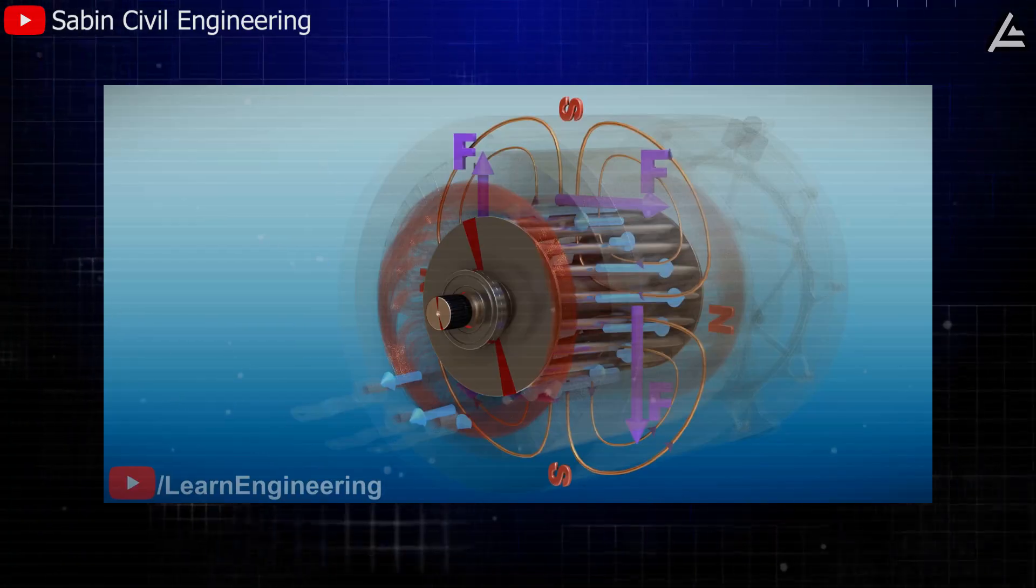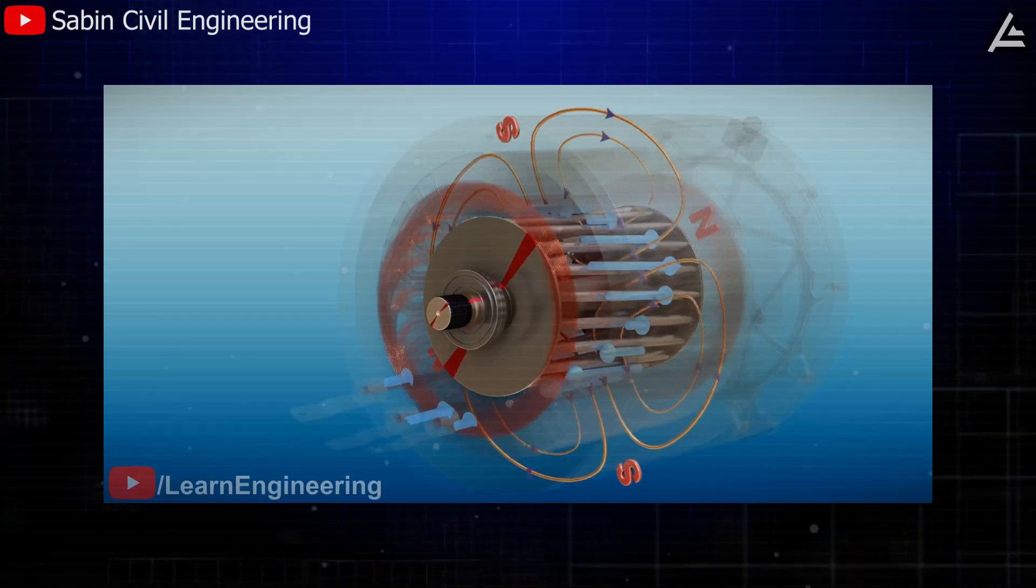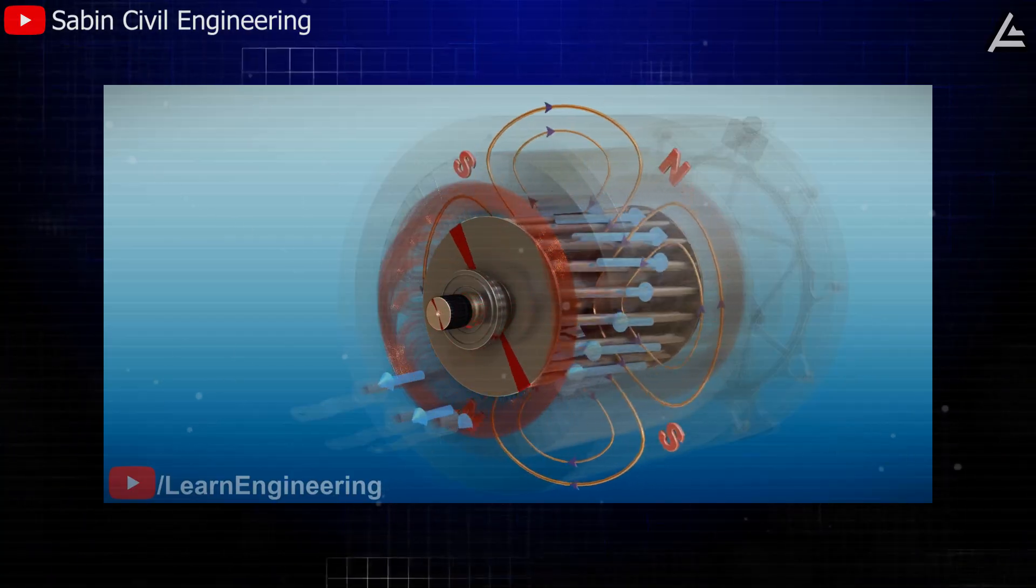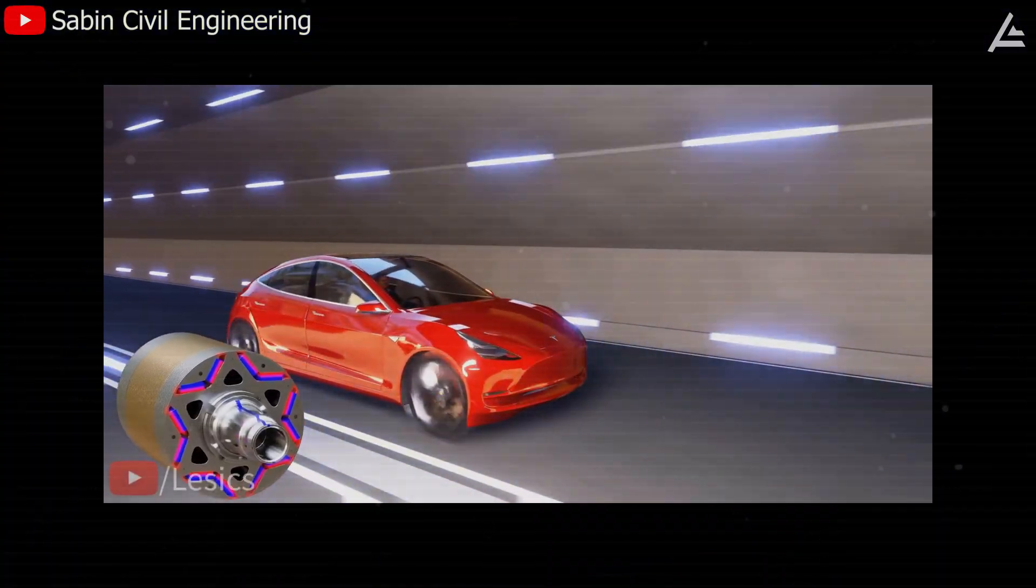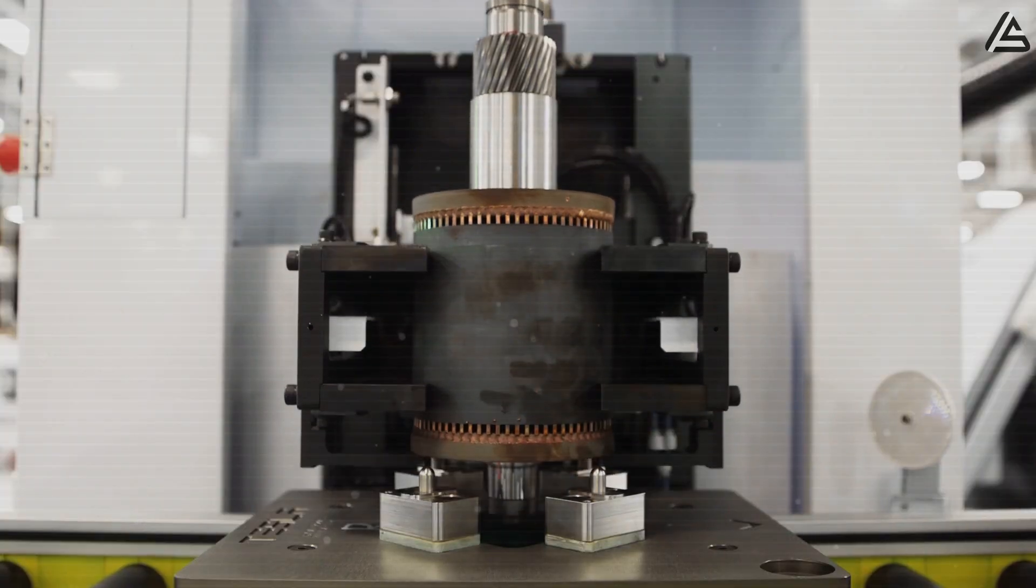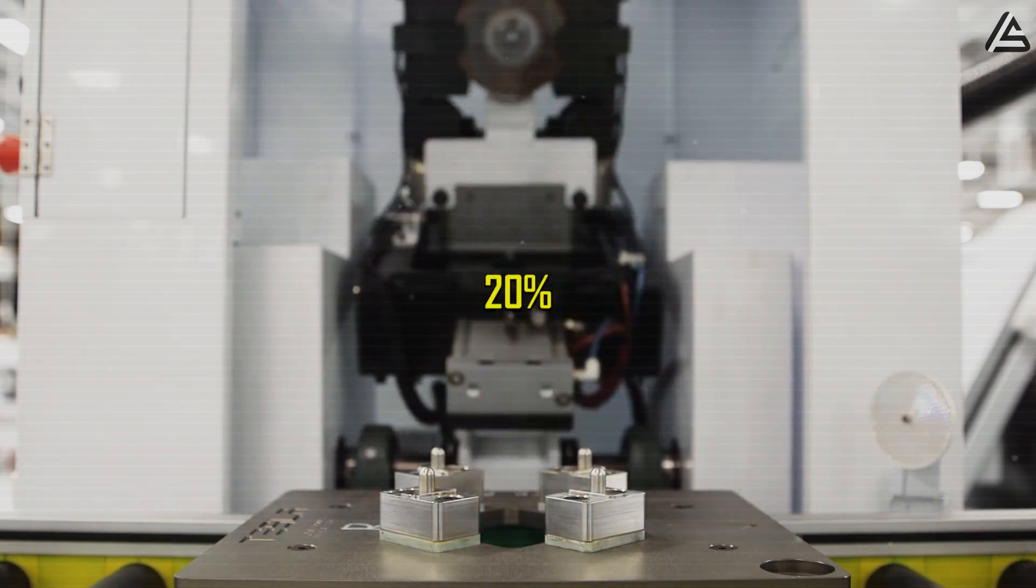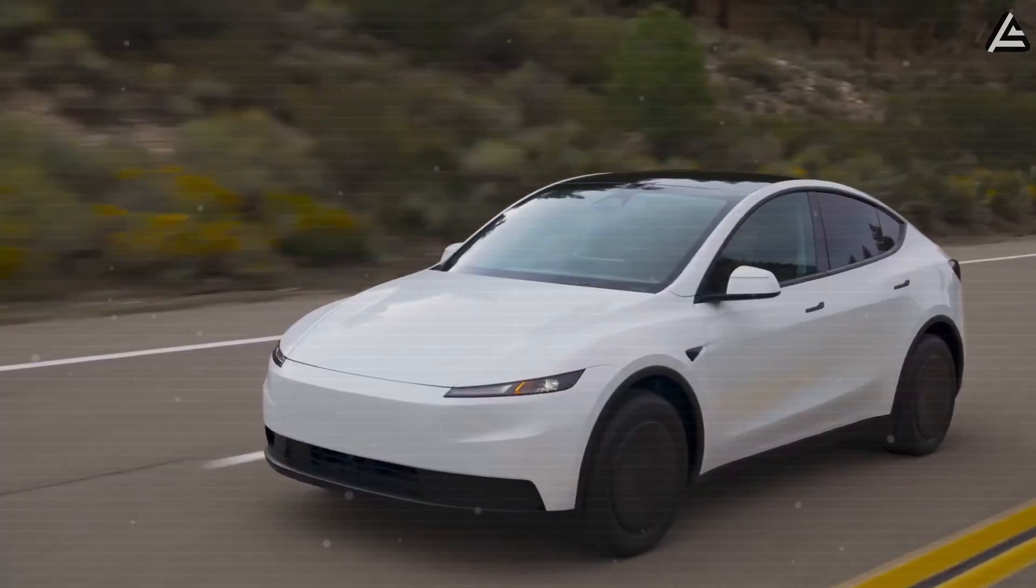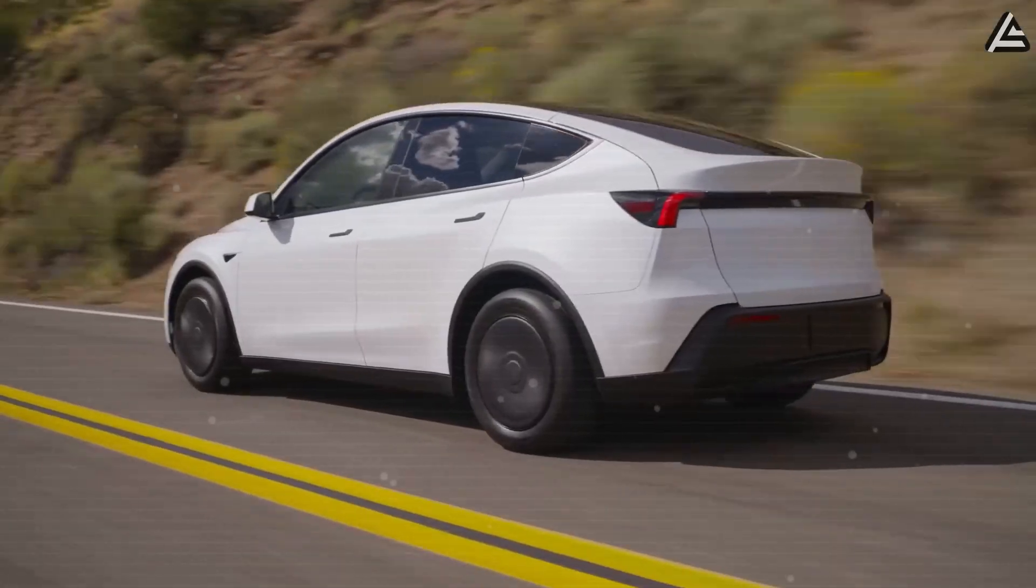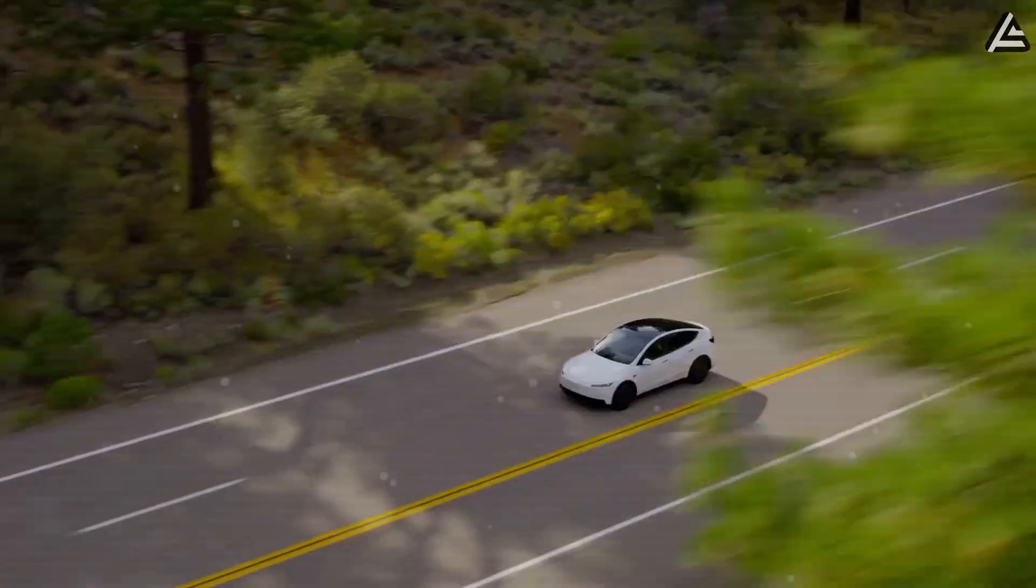In performance terms, that's the difference between a motor that merely delivers power and one that redefines power density. Because the carbon sleeve holds the rotor perfectly rigid, engineers can tighten the air gap by up to 20 percent, which boosts electromagnetic efficiency by roughly 5 to 7 percent. In an EV, that translates directly into faster acceleration, longer range, and reduced energy loss.